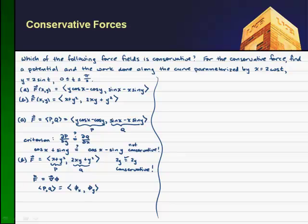So if phi x is equal to p, I get that phi x equals x plus y squared. And then I have that phi y is going to equal my q. Two vectors are equivalent if the components are equivalent. So phi y must equal 2xy plus y squared.